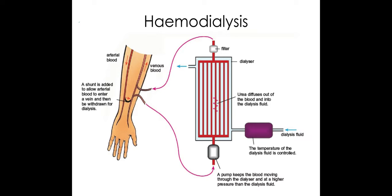The first one is hemodialysis. This is where blood is taken out of normally a vein and pumped into a machine where the blood is passed over a fluid membrane — a membrane with fluid on the other side that has the correct composition of solutes that should be in the blood. Anything in high concentration in the blood will diffuse into the membrane fluid, and anything in high concentration in the fluid will diffuse back into the blood.